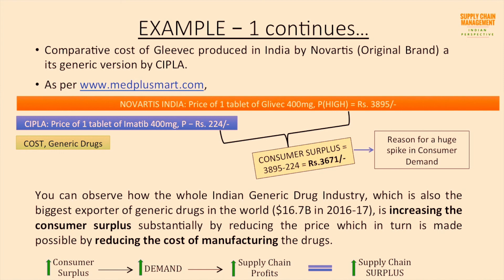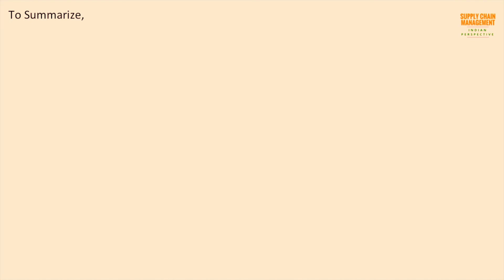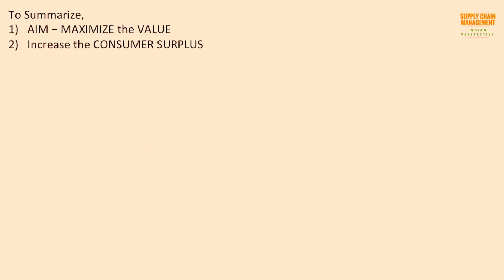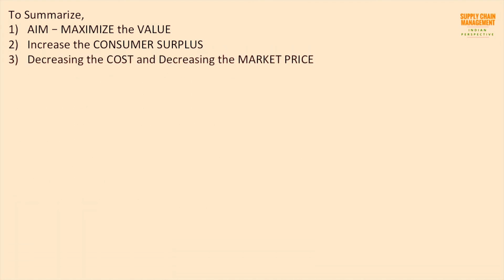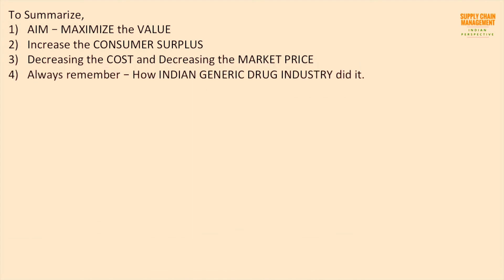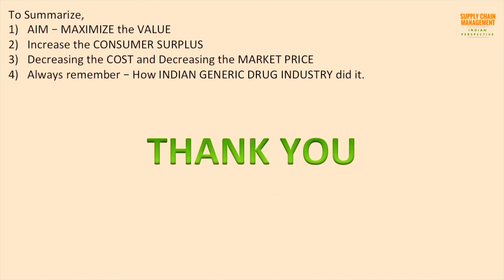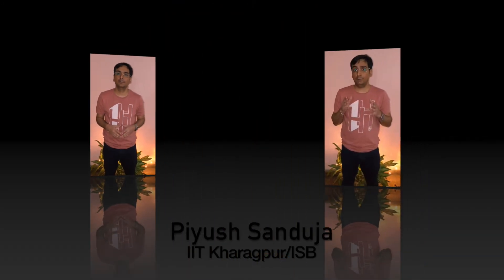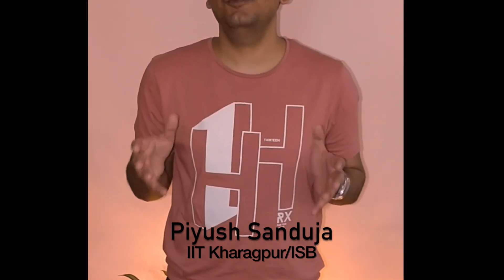This example gives a clear view of how important it is to consider supply chain surplus when devising your overall supply chain strategy, as it can make or break your business. To summarize: the aim of any supply chain is to maximize value. You can maximize value by increasing consumer surplus — decrease costs, then decrease market price. Always remember how the Indian generic drug industry did it. Thank you, and until the next video, bye-bye.